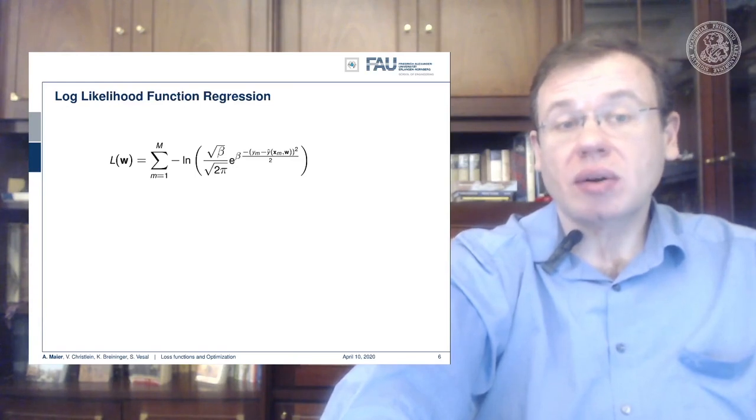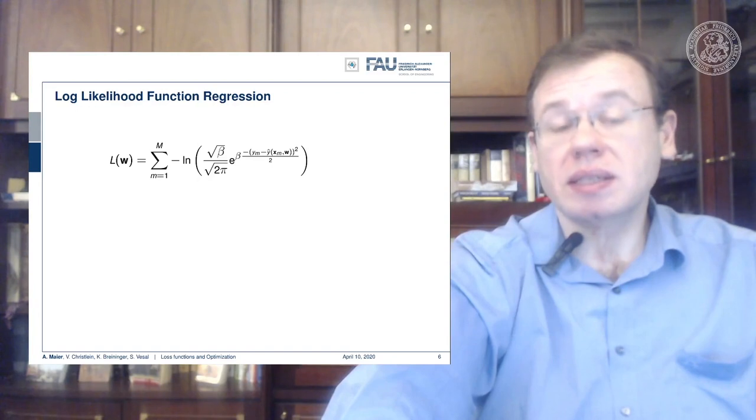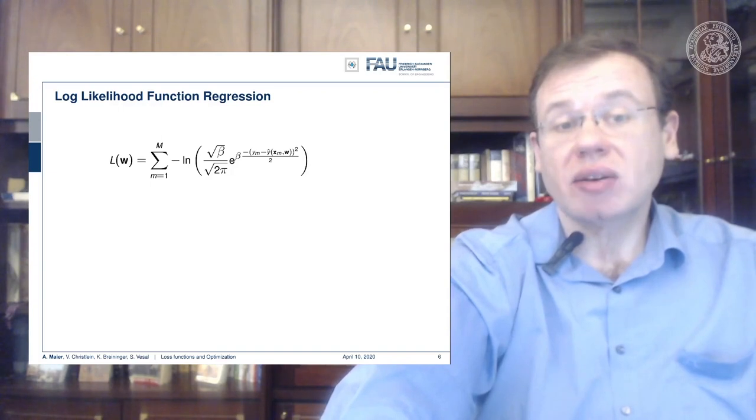Let's go ahead and put this into our log likelihood function. Remember, this is really something you should know in the oral exam. Everybody needs to know the normal distribution and everybody needs to be able to convert this kind of univariate Gaussian distribution into a loss function.